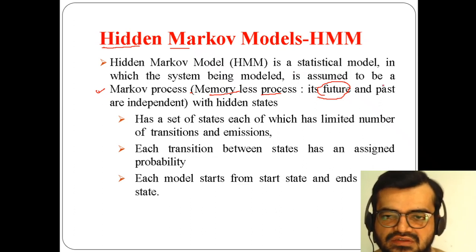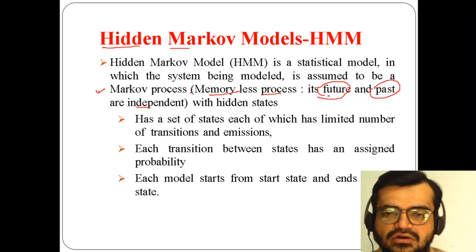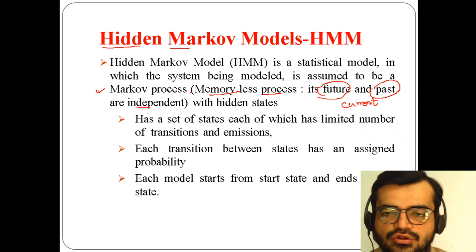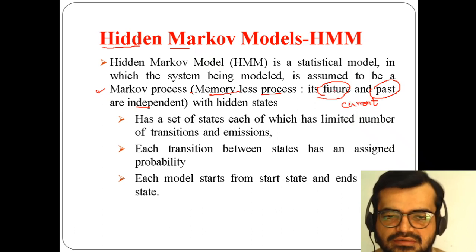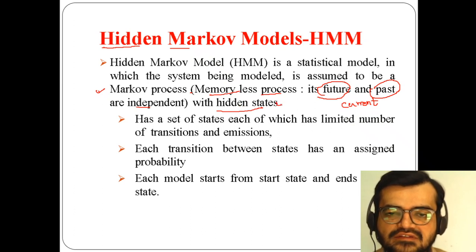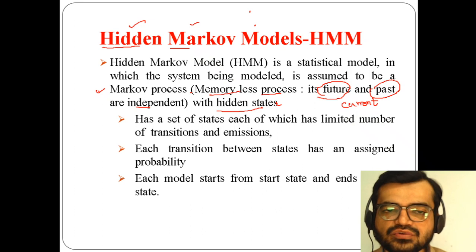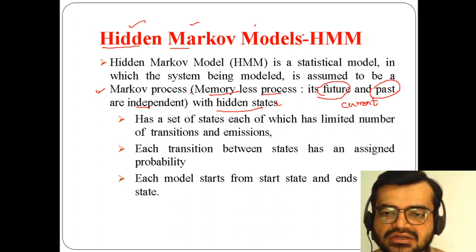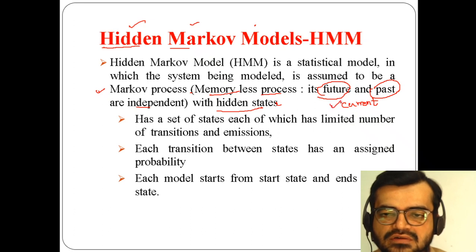It is termed a memoryless process because future and past states are independent. In order to find the future state, we concentrate on the current state rather than past states. With the Markov process, we also use the concept of hidden states — that is why it is termed the Hidden Markov Model. Markov process has no dependency on future or past states; the future state depends only on the current state.